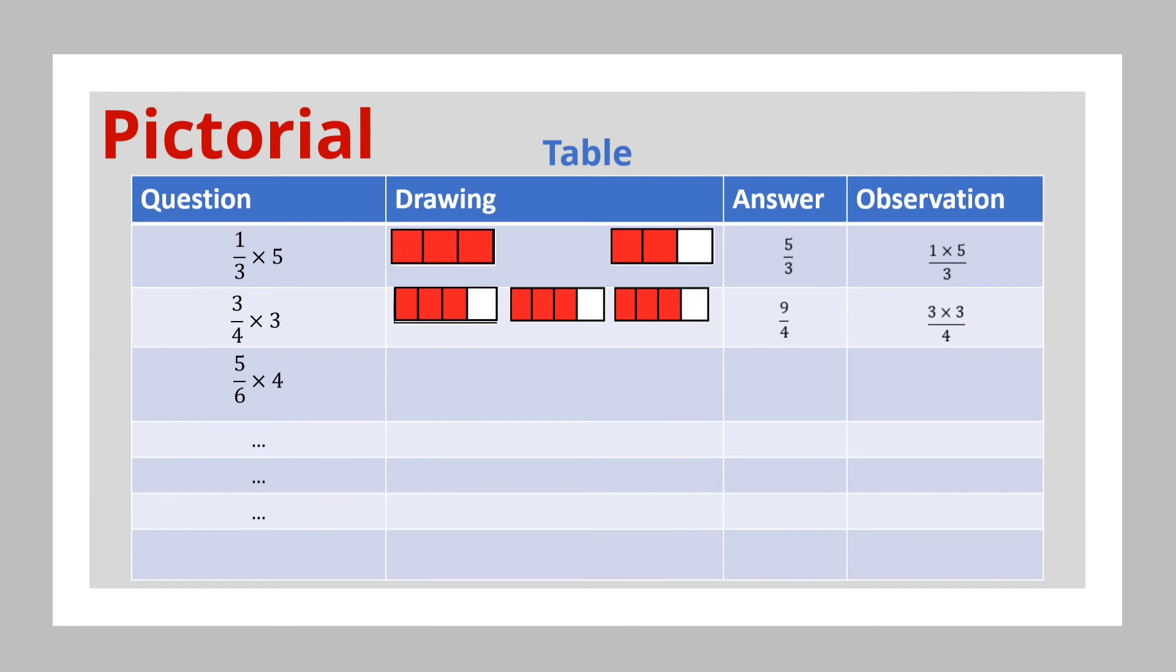You can provide some examples for the child to do on his own as at this time. For example, you can give them five-sixths times four and have them observe that this is a bar cut into six equal parts, and five of those six parts are shaded, and this particular bar is repeated four times. So that the total number of shaded parts would be twenty-sixths.